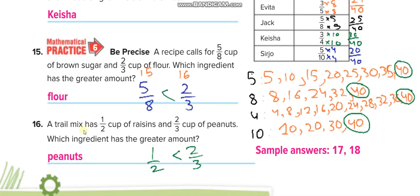For the word problem: a trail mix has 1 over 2 cup of raisins and 2 over 3 cup of peanuts. One half is half, and 2 over 3 is more than half, so peanuts are more.